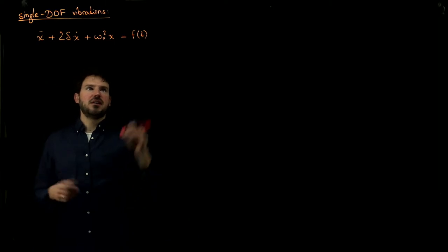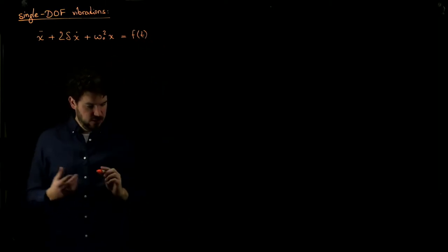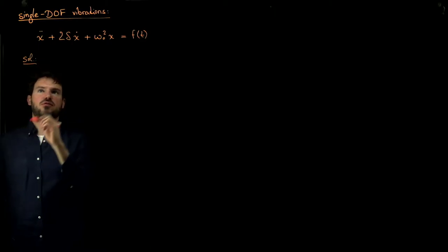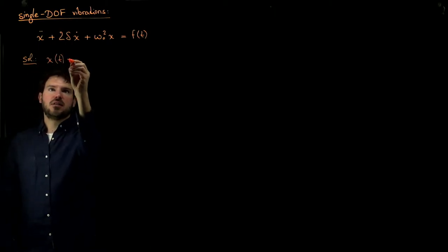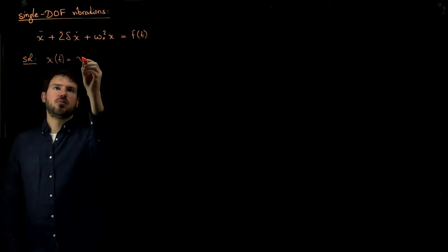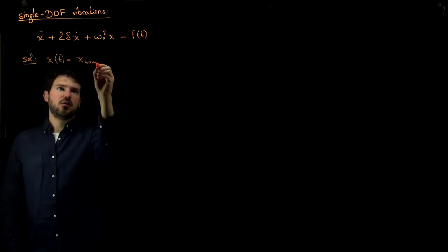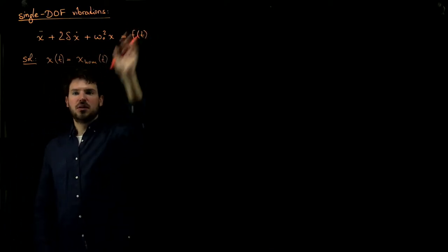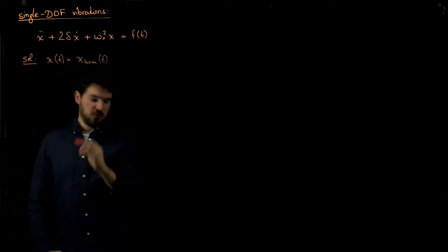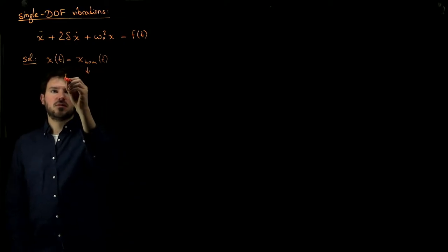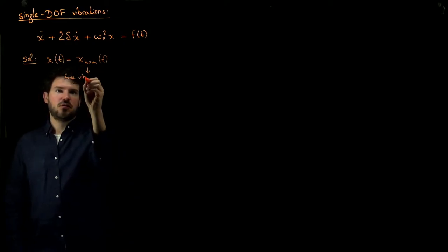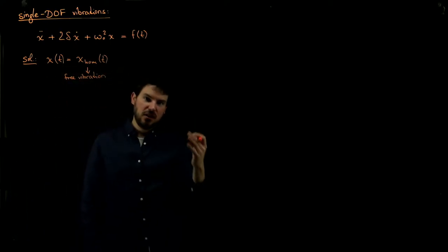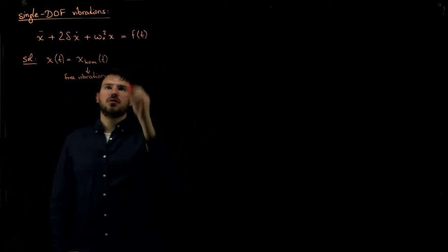For free vibrations, we discussed four different cases. With the right-hand side, the general solution is a bit more complex. In particular, x of t was decomposed into two parts: first, a homogeneous solution, which is the solution when the right-hand side equals zero — that is nothing else but the free vibration solution — covering the four cases of undamped, underdamped, critically damped, and overdamped.